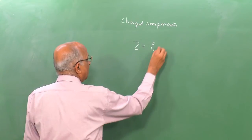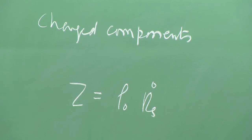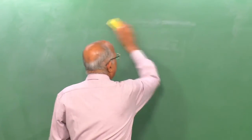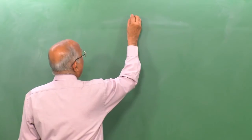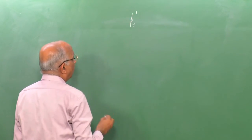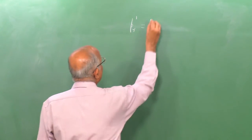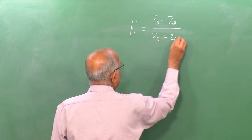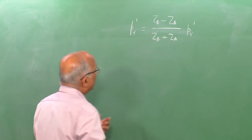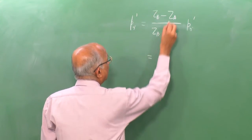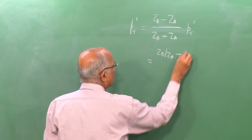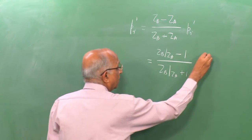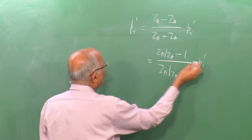Therefore I can use the same acoustic impedance derivation and specify the impedance as approximately ρ₀ times the shock speed. The transmitted and reflected pressures depend on the ratio Z_b/Z_a: p_r = [(Z_b/Z_a − 1) / (Z_b/Z_a + 1)] × p_i.